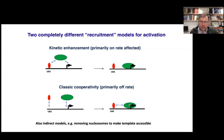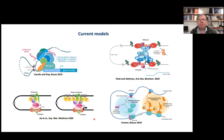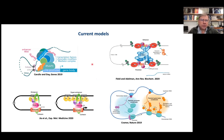But in bacteria, true activators work differently — they interact with DNA independently, and you get an increase in transcription by stabilizing through a cooperative interaction, which is primarily an off-rate effect. In eukaryotes, we can also think about indirect models: the activator allosterically changing the conformation of a target factor, or simply removing nucleosomes from the promoter to make it accessible.